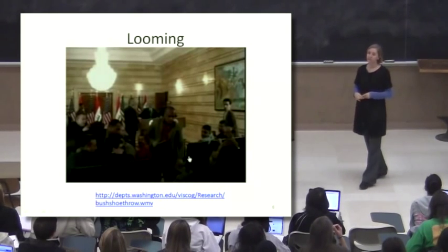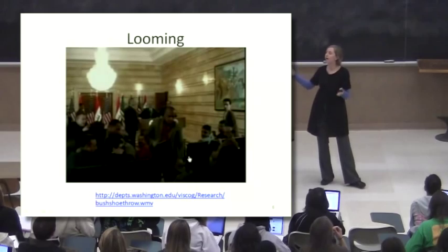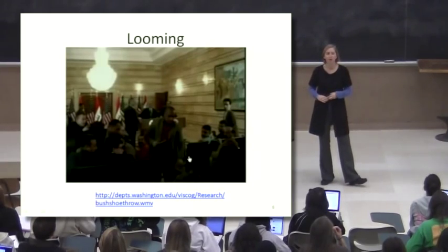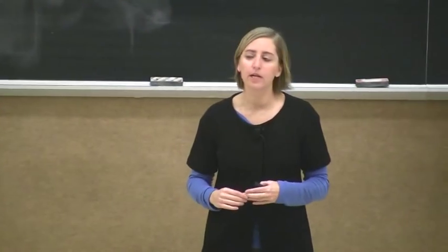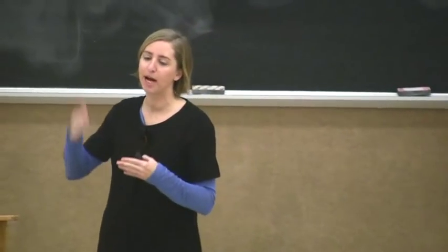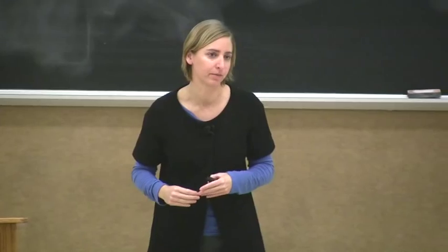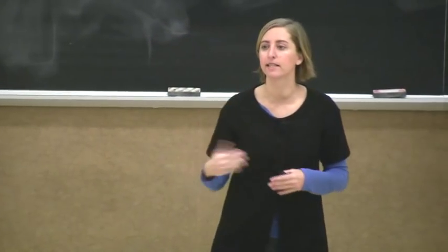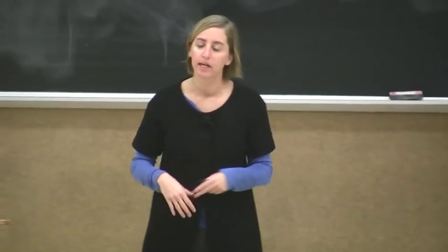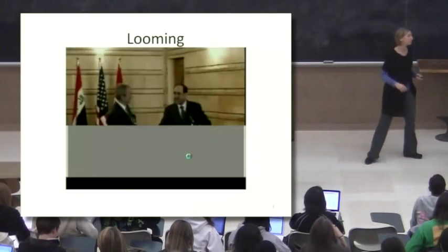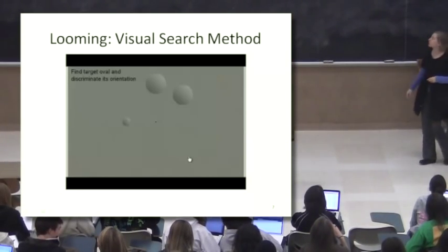And it's often the case, especially with perceptual research, you see a phenomenon in the real world and you want to know, is that true? Is that a real phenomenon? Is there some part of my brain that's actually processing that kind of information? So you create a task in the lab that allows you to study it. And one way to study looming motion is to use a visual search paradigm.